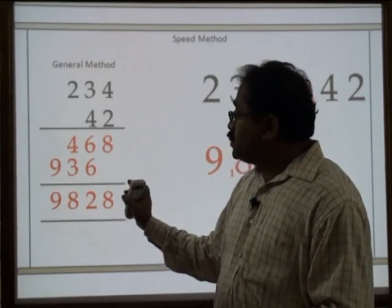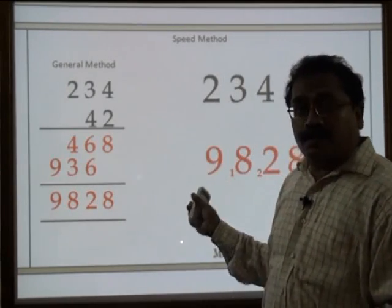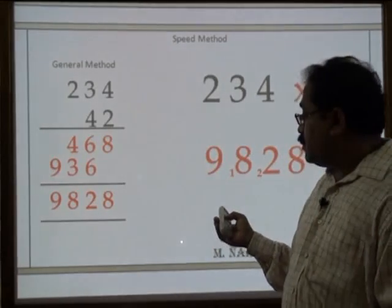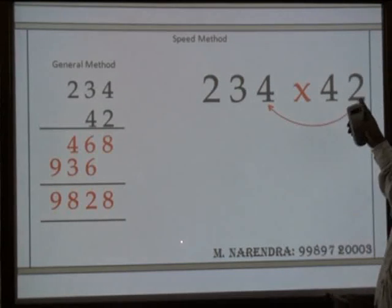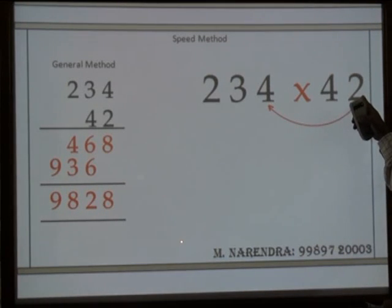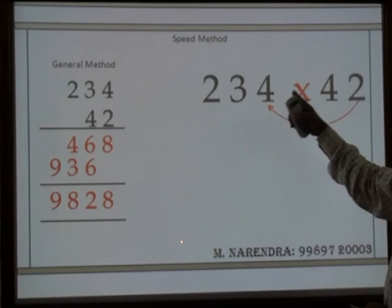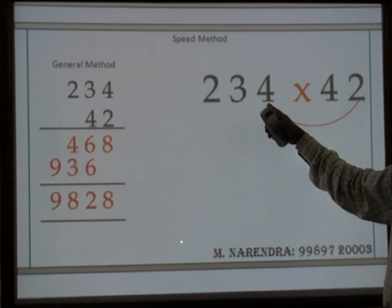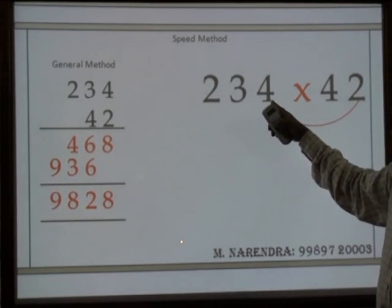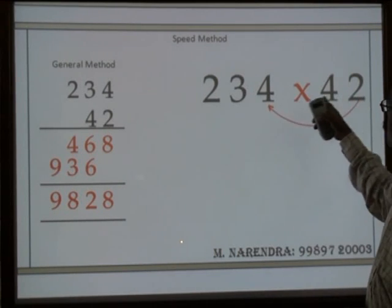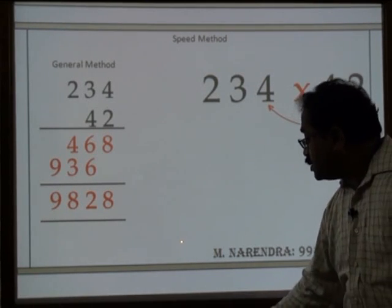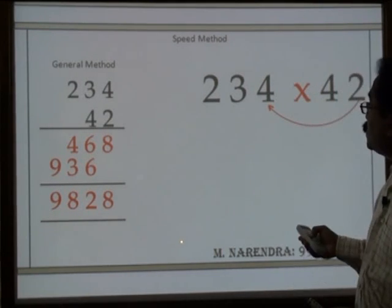Now, the same answer figure I should get in one line. How do we do it? The unit digit of 42 is 2. So we multiply 2 with the very first digit of 234, that is 4. So 2 into 4 is 8.